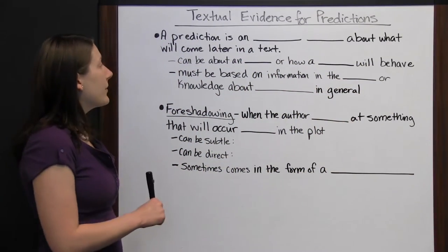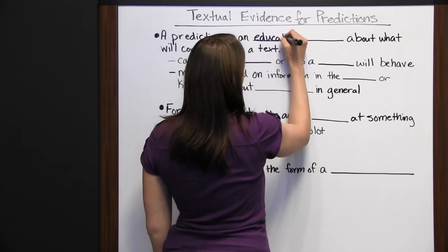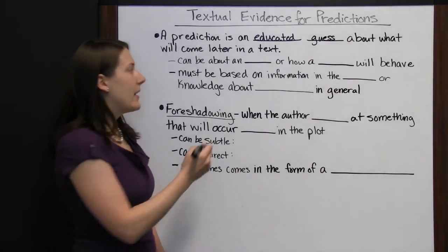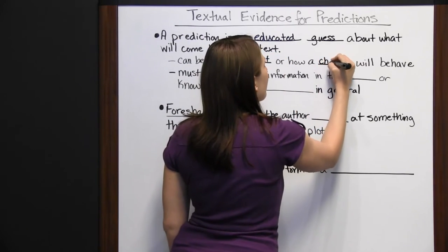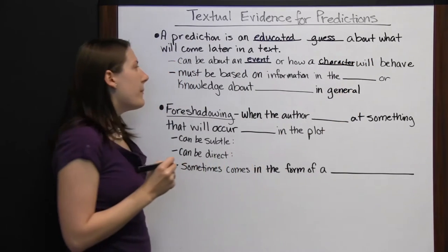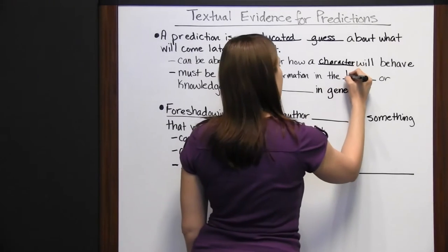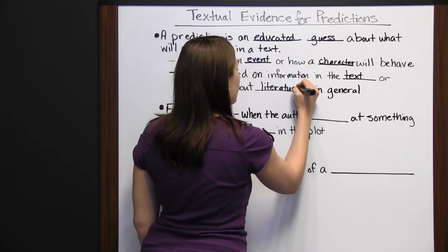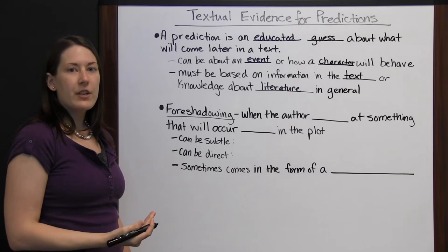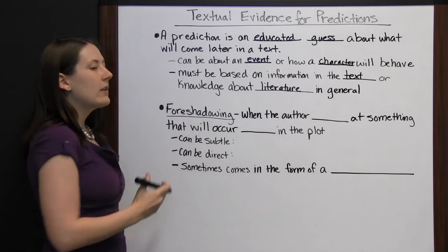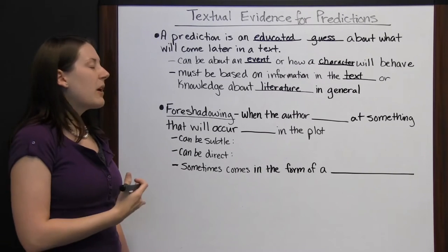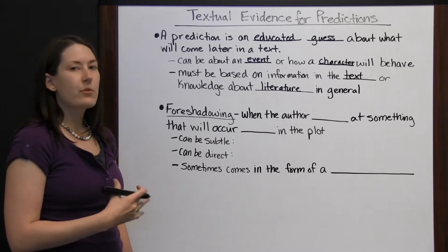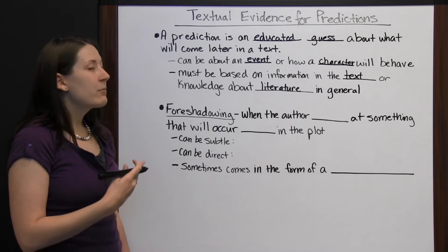A prediction is an educated guess about what will come later in a text. Your predictions can be about an event or about how a character will behave. Any prediction you make must be based on information in the text or based on knowledge about literature in general. For instance, if you've seen how a character has acted in a story so far, you can make a prediction about his future actions. With your knowledge about literature, you know the basic layout of a mystery novel, so you might be able to predict how the story is going to end up. The more you read, the more your general knowledge about literature is going to increase.